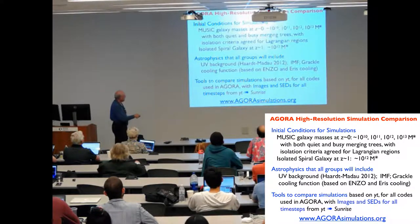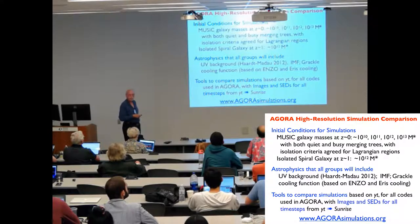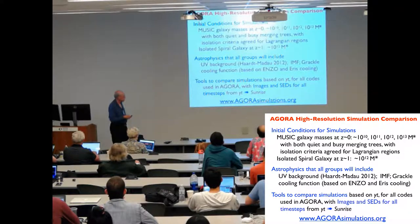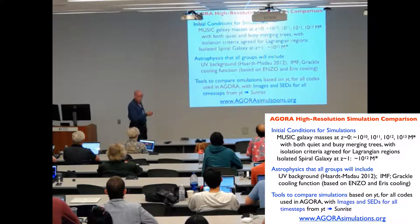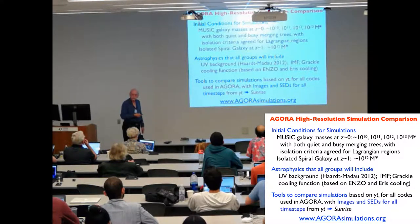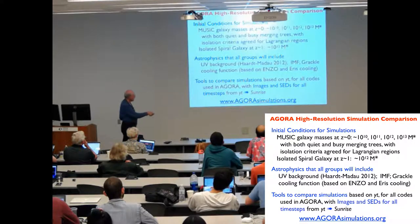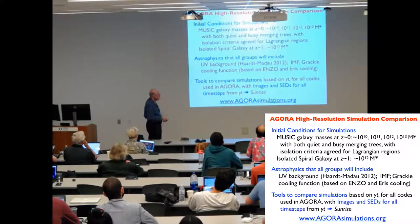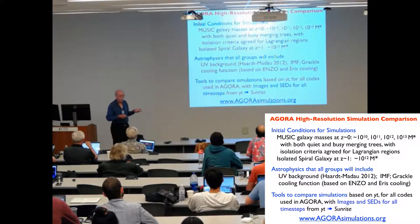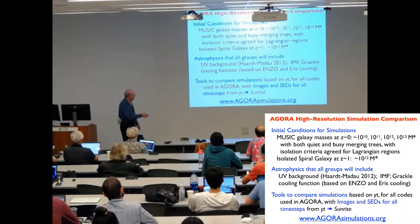And we compare the simulations using the YT 3D volumetric analysis and visualization package. So all the images that I'll show you and all the images that we generate are using YT. YT can read the output from all of these codes, and then the rest of the analysis is done in parallel. We also can make sunrise images, taking into account stellar evolution and the effects of dust, scattering and attenuation, because sunrise is set up to work directly from YT.